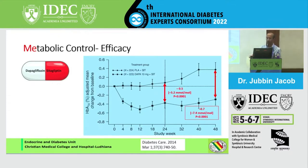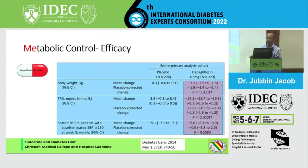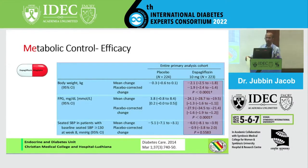That is one good thing with this combination of dapagliflozin and sitagliptin. For barometabolic control, the body weight reduction is about 2 kg in the group using both sitagliptin and dapagliflozin. Fasting blood sugar control shows about a 24-point reduction, and there is also a slight reduction in systolic blood pressure in patients.